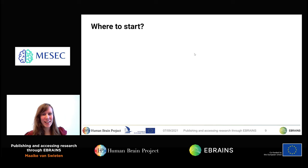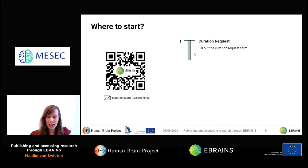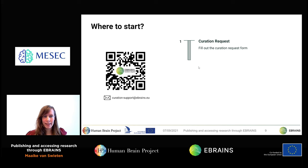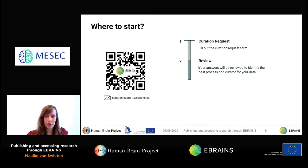If you want to share data through eBrains, you first have to fill out a curation request — a short survey in which we ask you to tell us a bit more about the research you would like to share. You can always reach out to the curation support team with questions. Based on your answers, we identify the best process and curator for your data, since all our curators have a neuroscience background — some are more specialized in human research and others in rodent research.